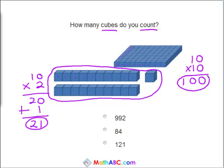Now, knowing just this right here, which of these do you think would be the correct answer? 992, 84, or 121? Yes, 121 because we know we have a 100 and a 21, and added together, it is 121.